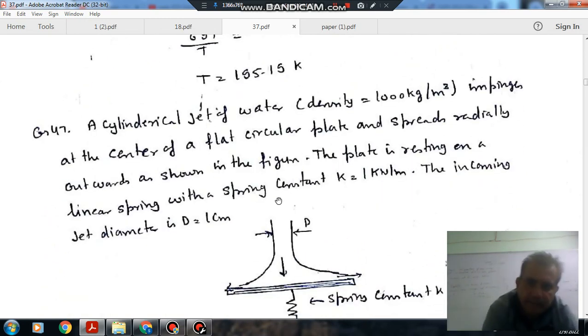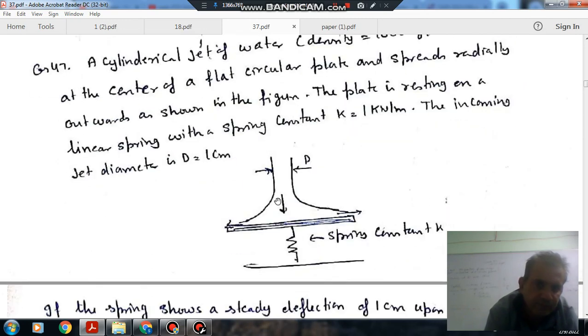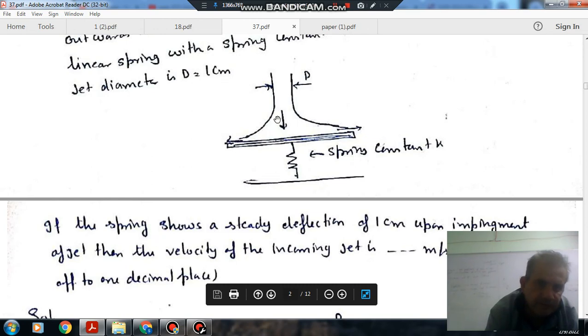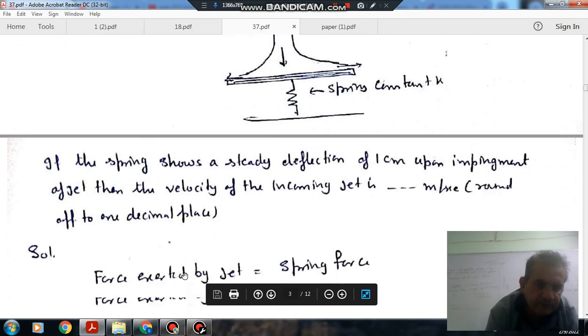A cylindrical jet of water, density 1000 kg/m³, impinges at the center of a flat circular plate and spreads steadily outwards as shown in the figure. The plate is resting on a linear spring with spring constant K = 1 kN/m. The incoming jet diameter is 1 cm. If the spring shows a steady deflection of 1 cm upon impingement of the jet, then the velocity of the incoming jet is dash meter per second, round off to 1 decimal place.